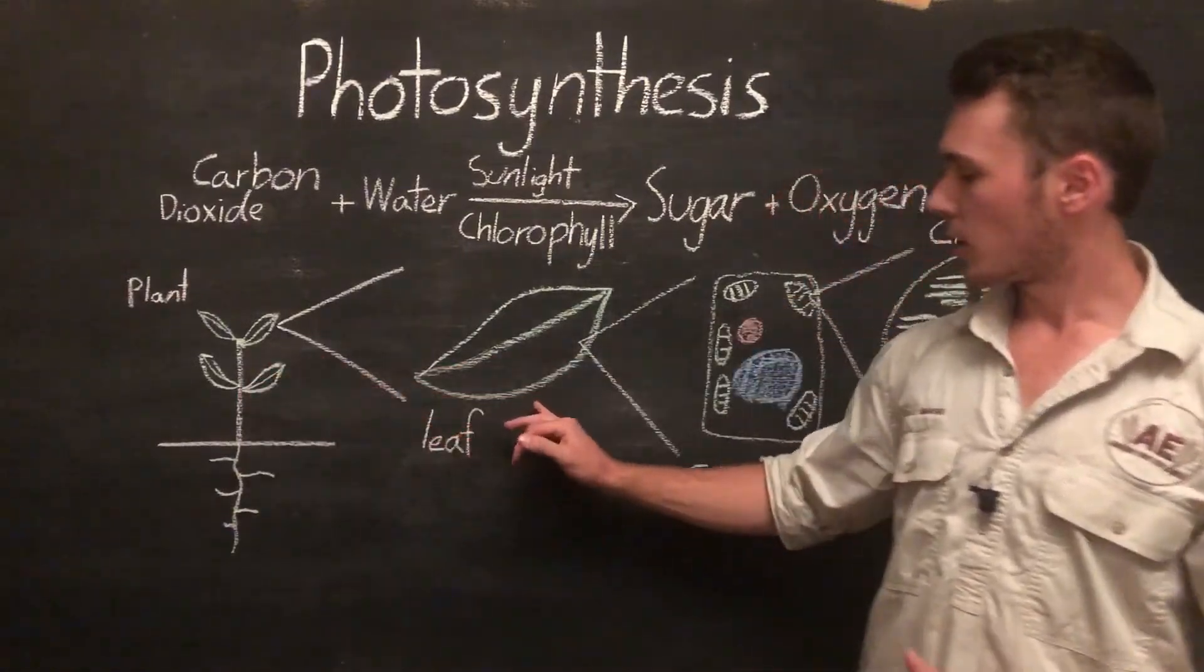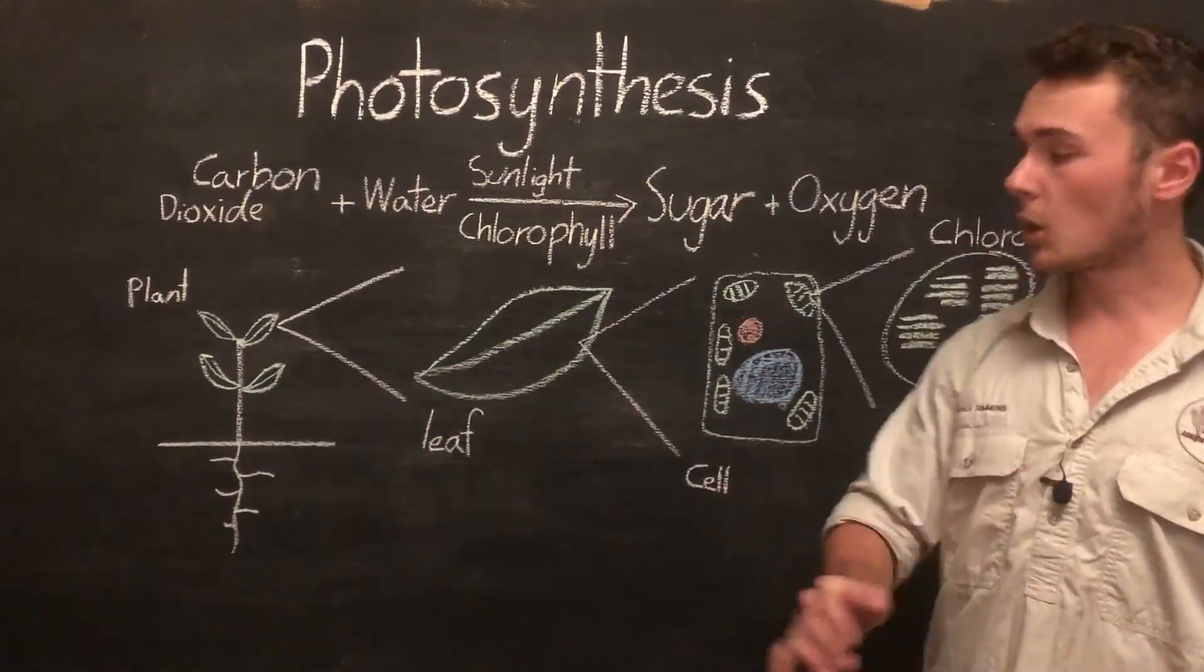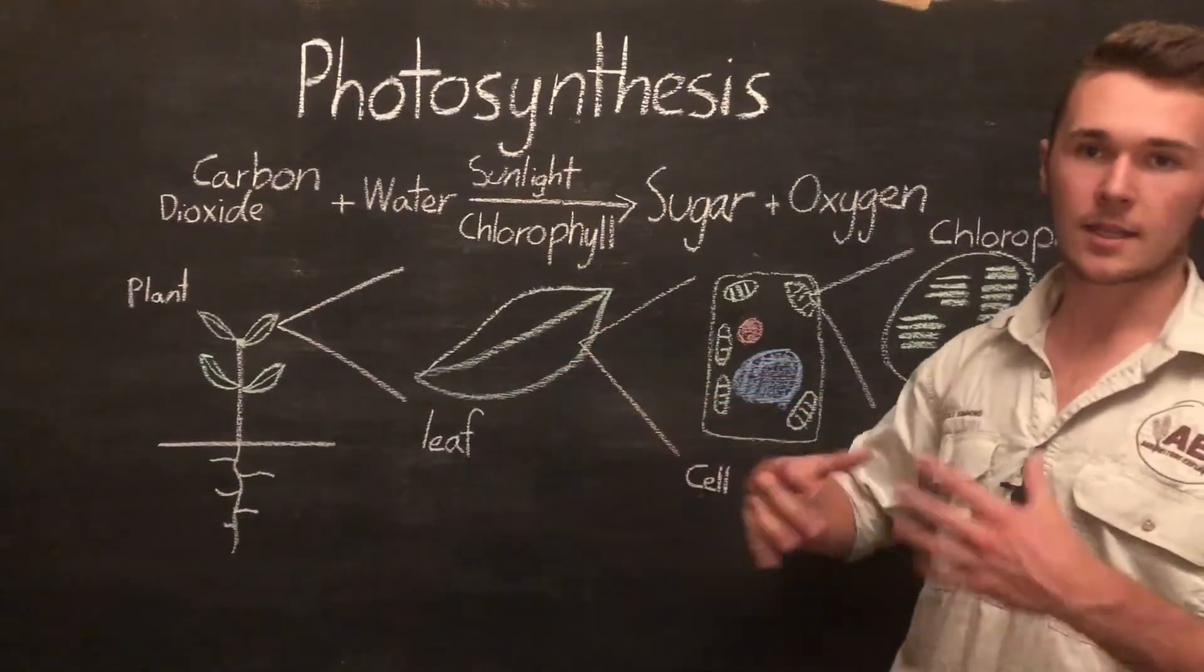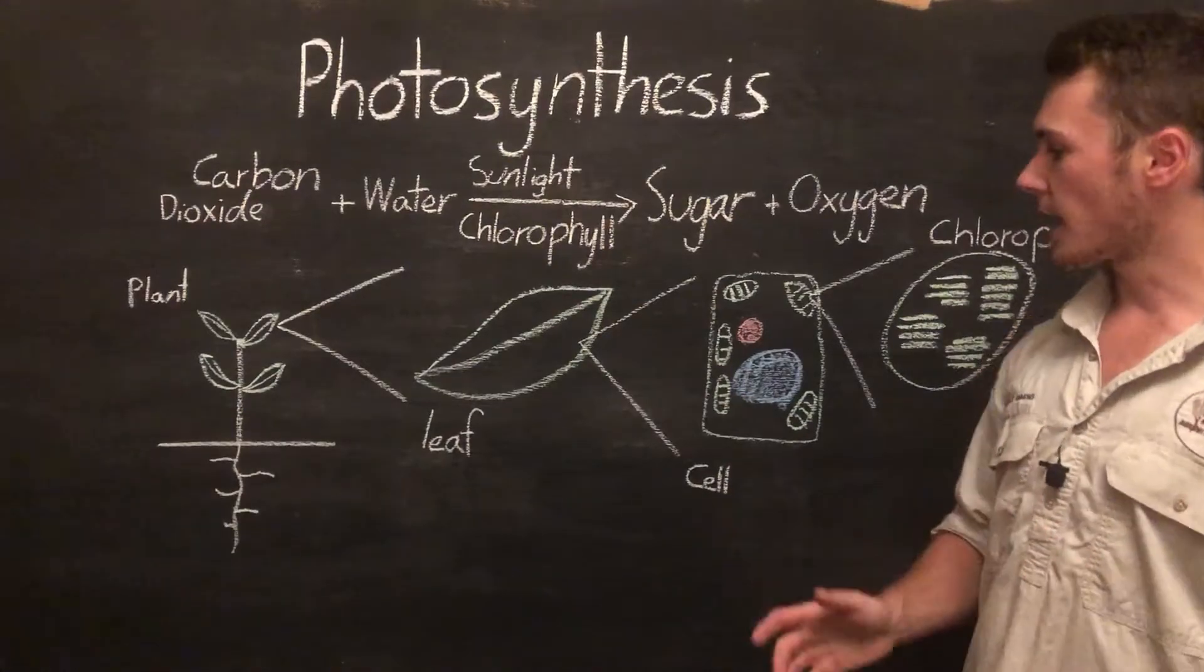So inside the leaf, which we can see here, that's where photosynthesis takes place. The light comes in, it hits the leaf and is absorbed. Now the energy carried in the light is then used for this reaction.